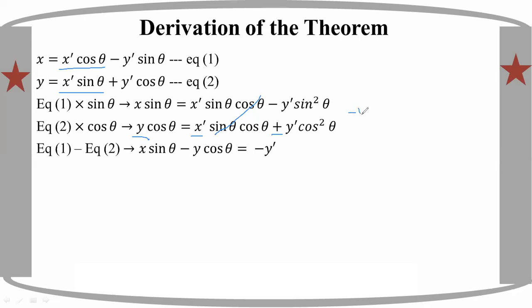The part is equal to minus 1 prime sin squared theta. Then sin squared theta, plus...